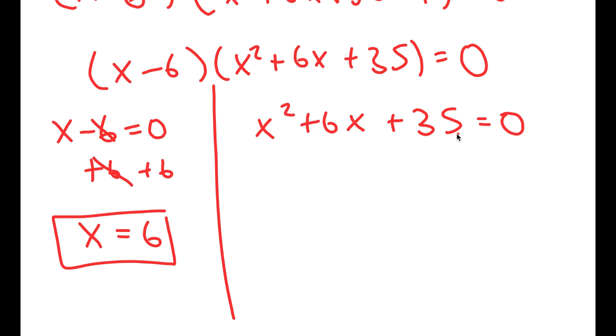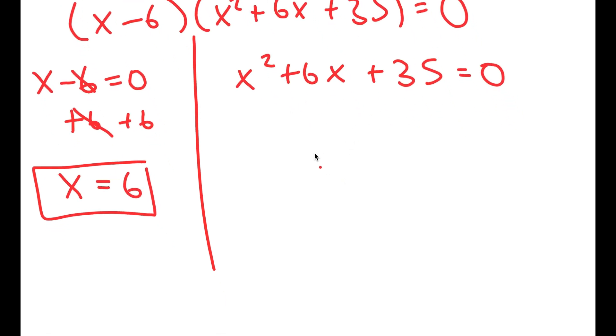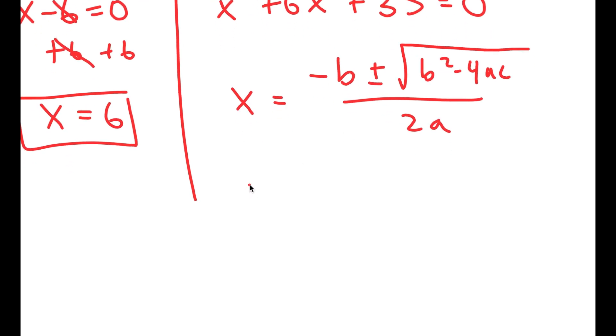Now for x squared plus 6x plus 35 equals 0, to solve this, I can use the quadratic formula, which is negative b plus or minus the square root of b squared minus 4ac all over 2a. So in this case, a is 1, b is 6, and c is 35.